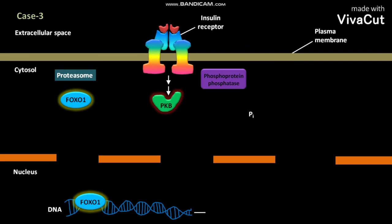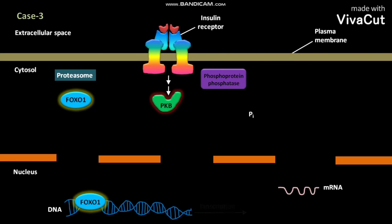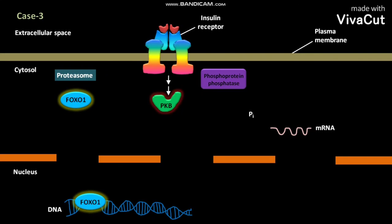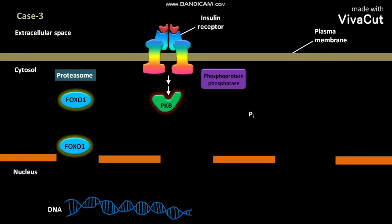This binding triggers the transcription of the associated genes, producing mRNA. The mRNA then moves out of the nucleus and reaches the cytosol, where it undergoes translation to produce PEP carboxykinase and glucose-6-phosphatase. The bound FOXO1 then moves out of the nucleus and returns to the cytosol.